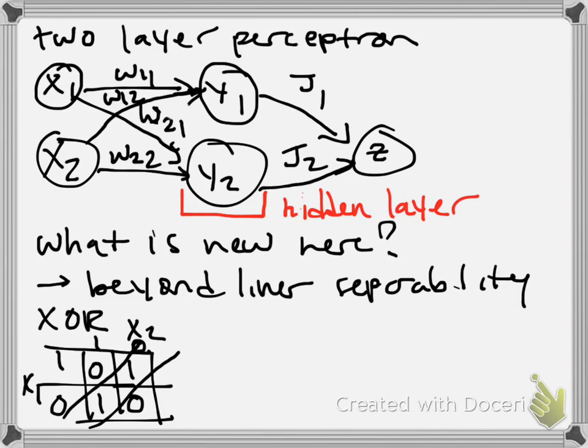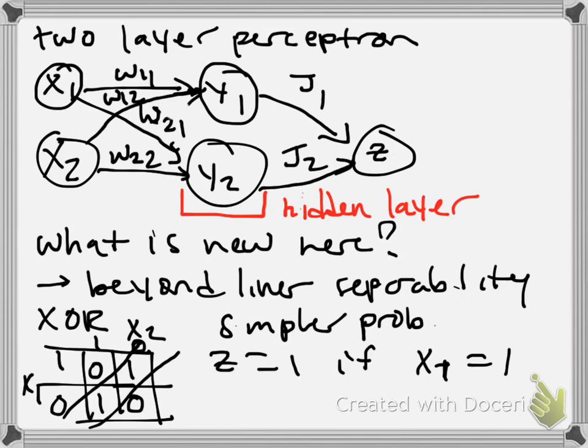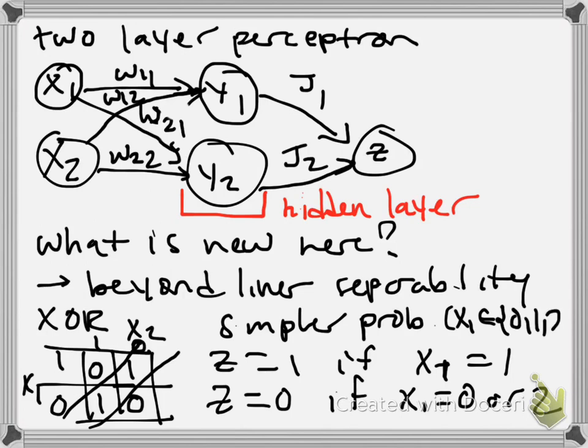But let's consider maybe a simpler problem just to demonstrate our case. Let's say we want the above perceptron to spit out Z equals one if X1 equals one and Z equals zero if X1 equals zero or two. So now X1 we're taking to be a ternary variable, it can be zero, one, or two, and we're just going to completely ignore X2 just to make this simple.